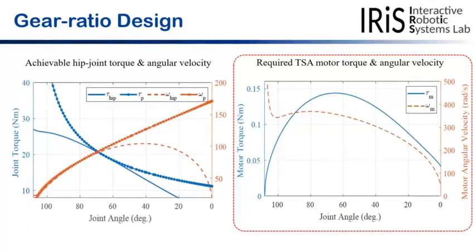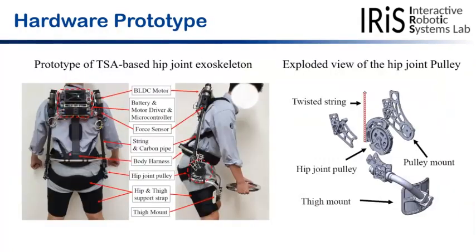The developed exoskeleton has a pair of TSAs that is located beside the hip joint starting from the back of the shoulder. It contains harness and mount for supporting upper body, hip, and thigh.